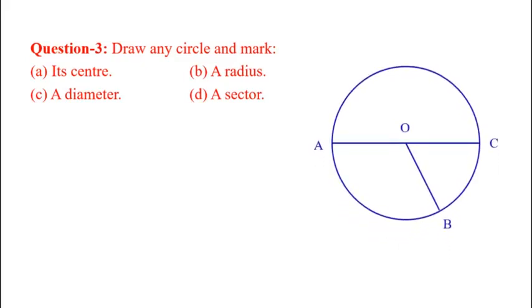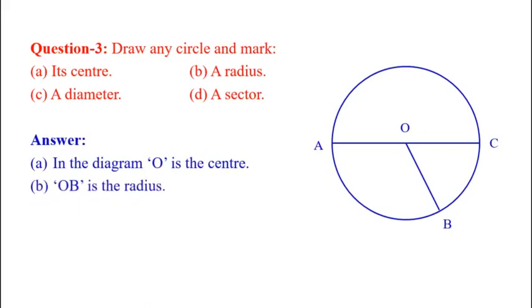So, this is the circle, where in this diagram O is the center, OB is the radius, also OA and OC are also radii of this circle.